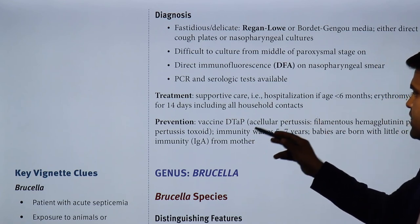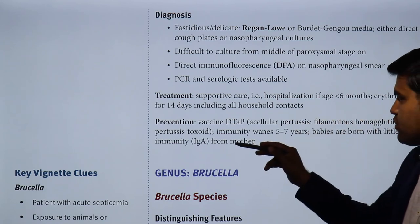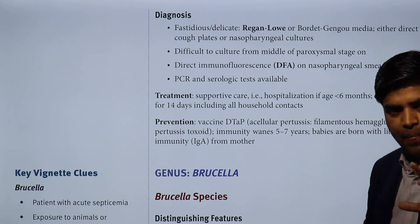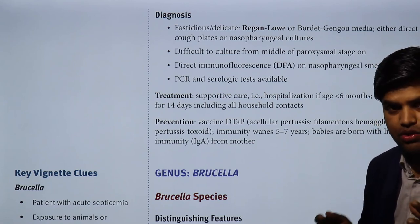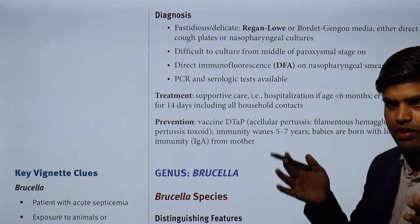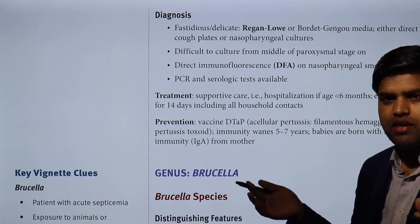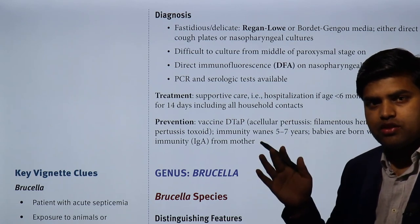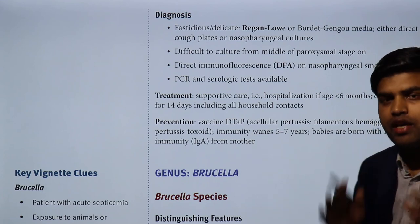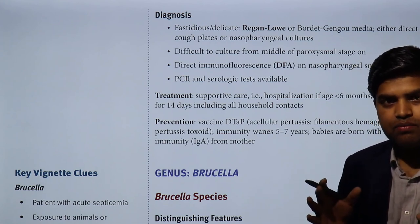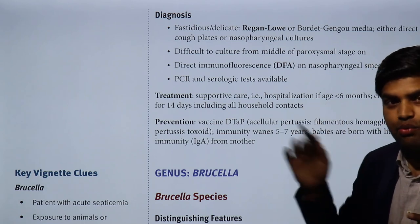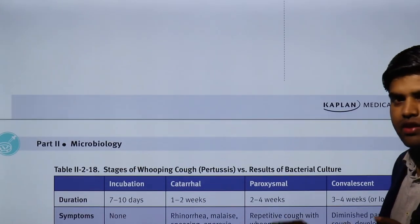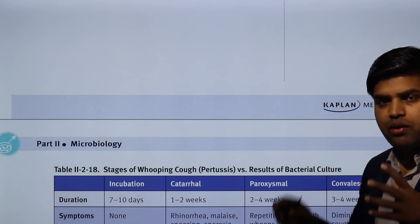Prevention can be done with vaccination — that is DTaP, acellular pertussis, filamentous hemagglutinin, plus pertussis toxoid. Immunity wanes after 5 to 7 years. Babies are born with little or no immunity from the mother. The baby which is just born has no immunity, and since the vaccination schedule — in Nepal, or say in Asia, all over the world — we vaccinate at one and a half months, about 6 weeks of age, then we give vaccination. So between birth and 6 weeks, they are very prone to get infected. Baby needs to be protected from this bacteria, because at that time they have no immunity and no immunization. Even later, the immunity after vaccination wanes, and that period also becomes a vulnerable time.